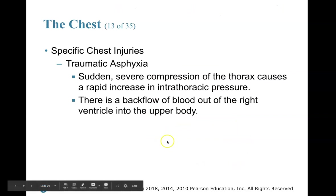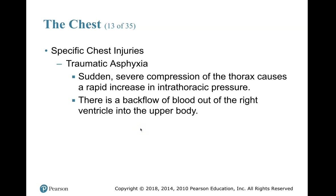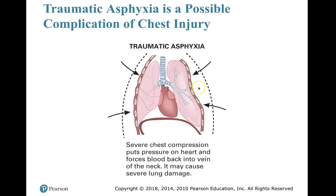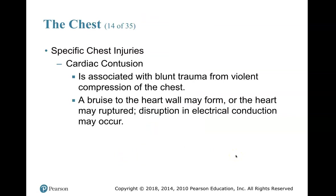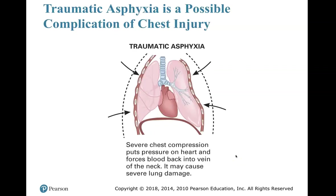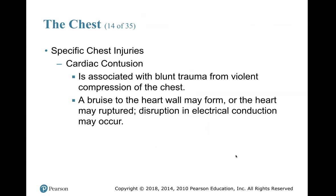Traumatic asphyxia: sudden, severe compression of the thorax causes a rapid increase in intrathoracic pressure. There is a backflow of blood out of the right ventricle into the upper body. That chest wall is being squeezed — severe chest compression puts pressure on the heart and forces blood back into the veins of the neck. It may cause severe lung damage. One thing you're going to see with this is probably jugular vein distension, because that vein in the neck is the jugular vein — look up a picture of JVD if you're unsure what it looks like.